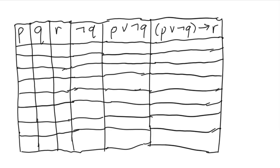Let's answer this one by one using an app. The expression is p or not q implies r. Notice we have eight rows this time, because we have three variables: p, q, and r.